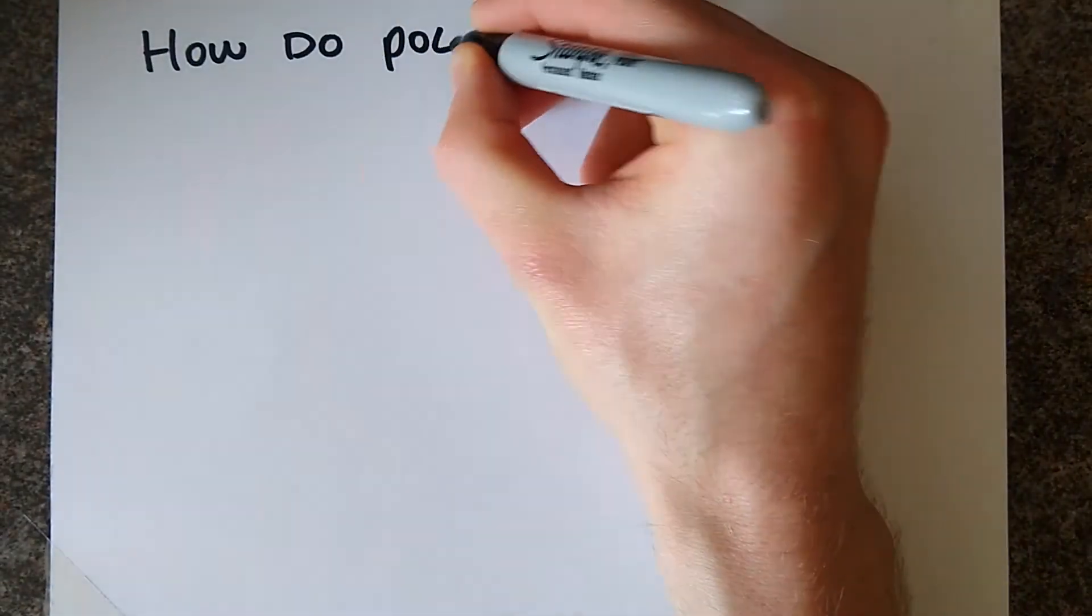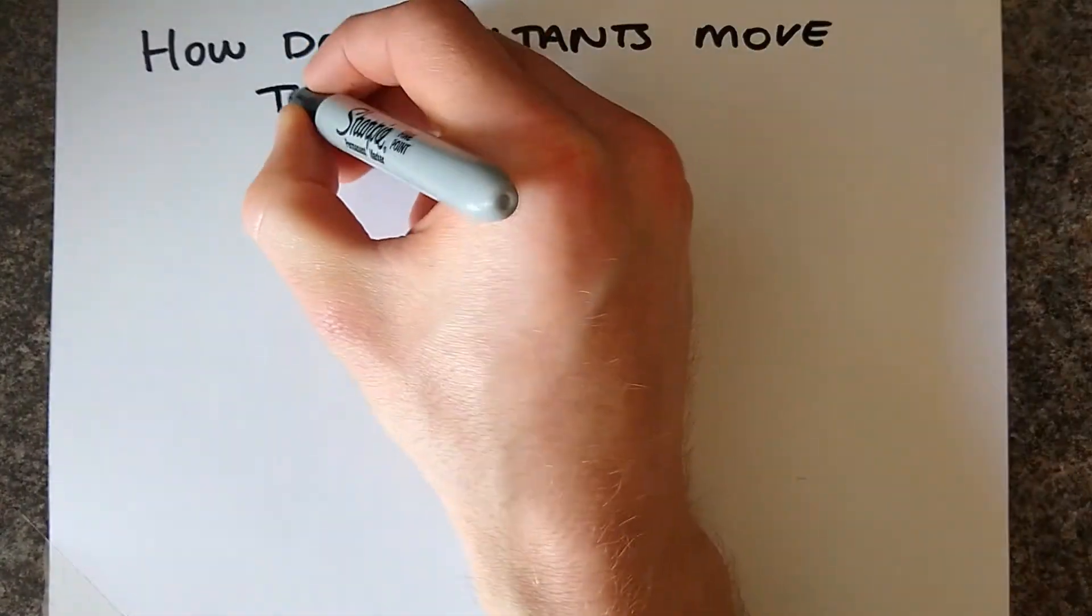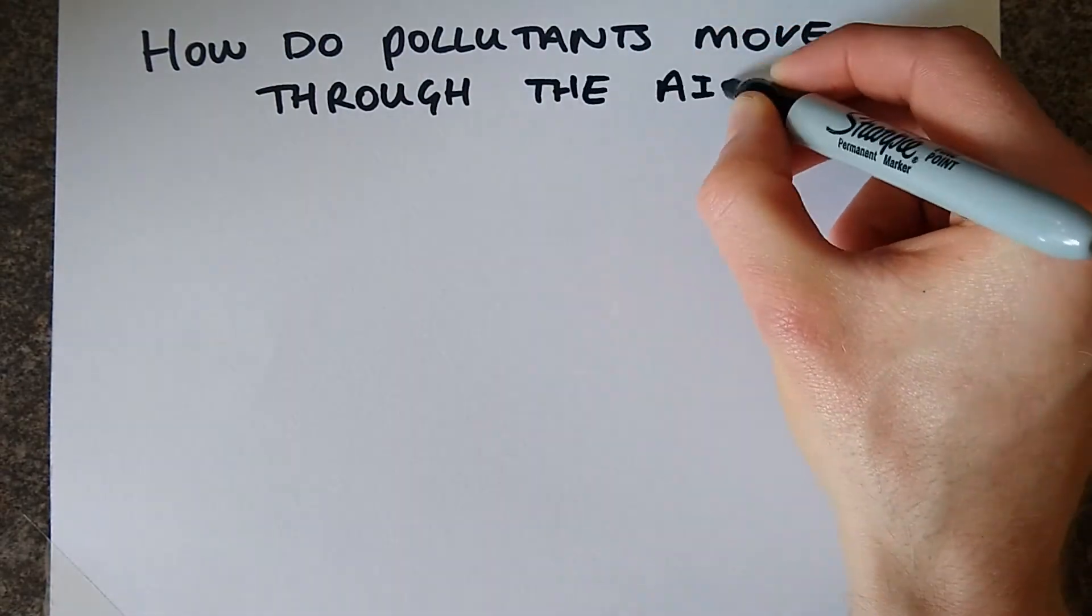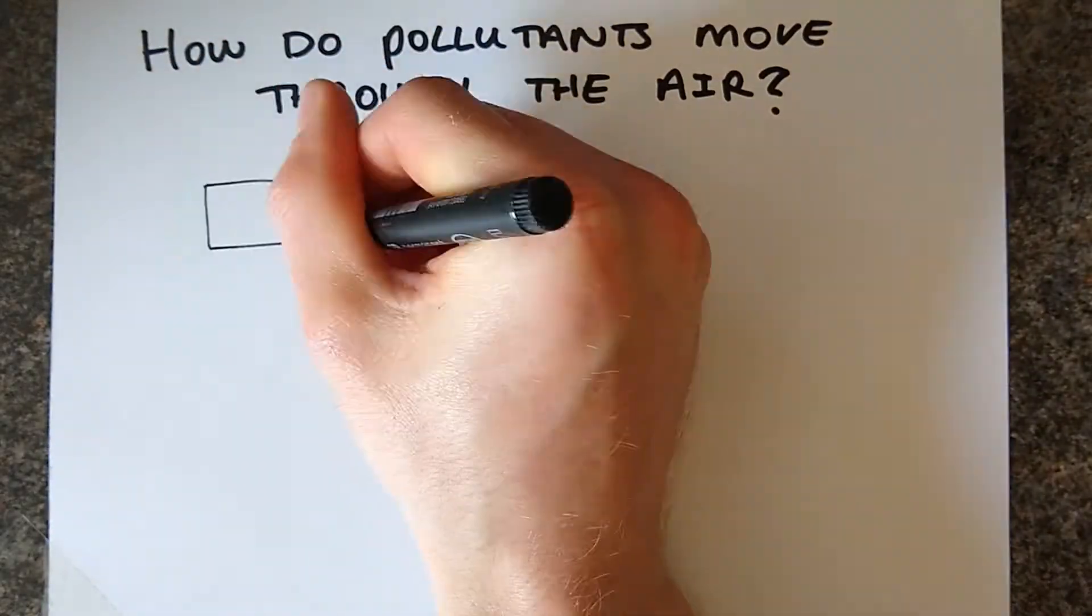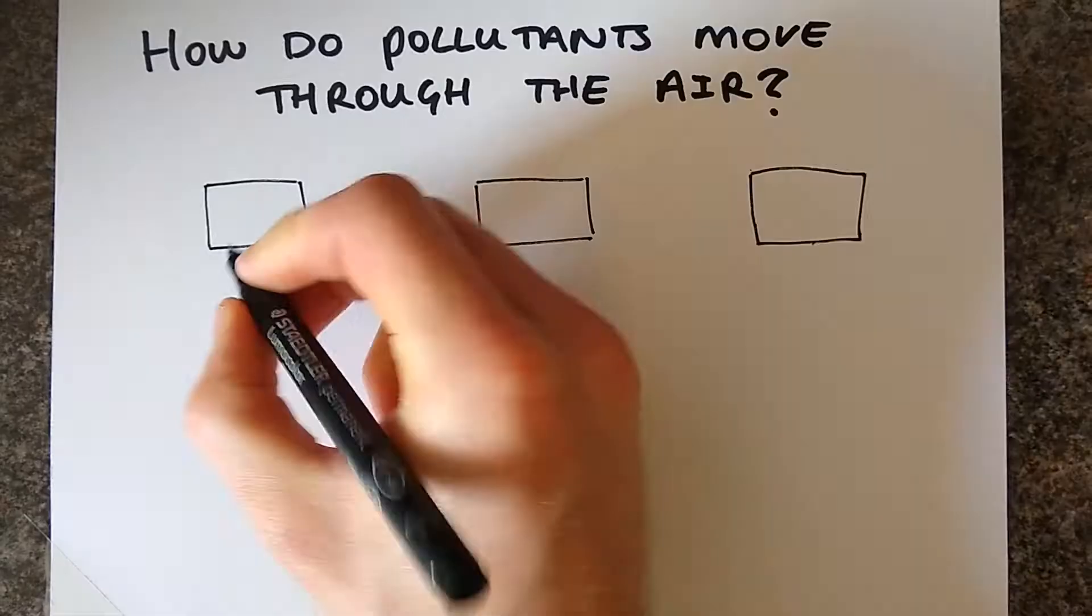So if air quality is the measurement of pollutants that we are breathing, then it is important to understand how pollutants move through the air. How do pollutants move through the air?